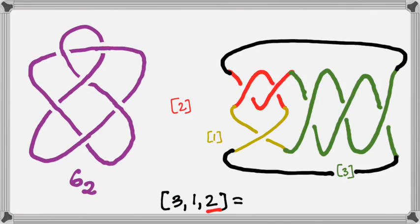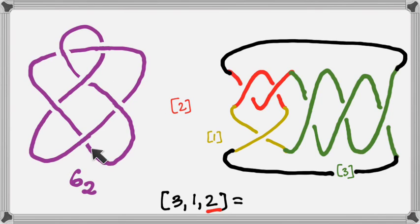After we untwist that and untwist this, we have negative three stacked up vertically on this side. Jumping ahead, the claim is that the continued fraction 3, 1, 2 builds this tangle: two horizontal twists followed by a twist on the bottom, a positive twist, followed by three positive twists on the right, and then closed up using the numerator closure — that that's equivalent, right-of-Reidemeister equivalent, to the knot 6-2. So let's see if we can figure out how to make these crossings correspond — which corresponds to which.